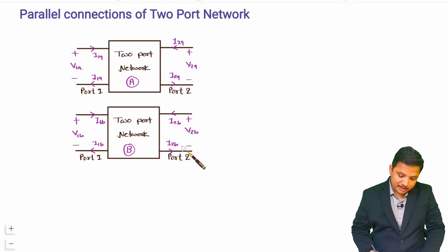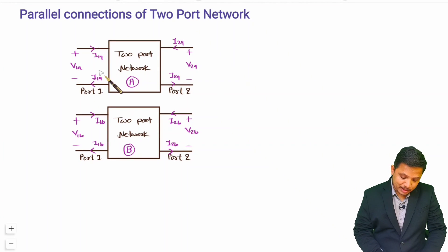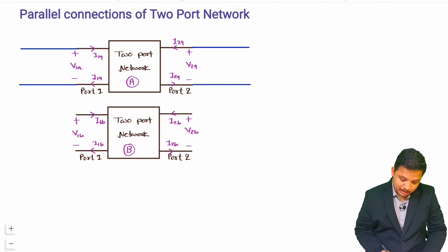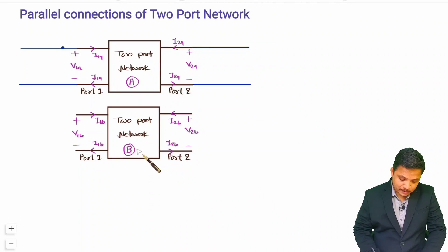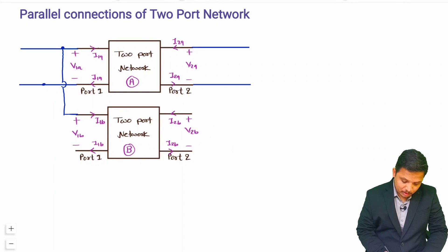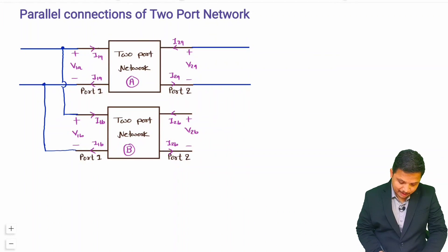Now I will explain the parallel connection of these two two-port networks. We provide a parallel connection at port 1 of both networks by connecting the terminals of network A with the corresponding terminals of network B at the input side.